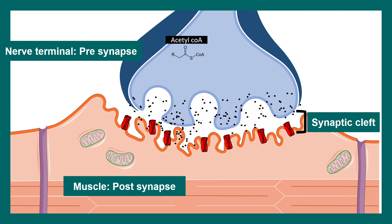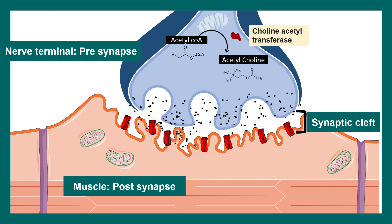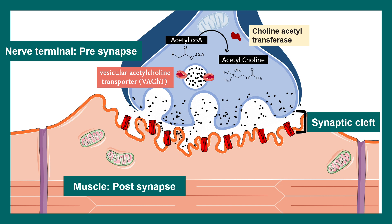Acetylcholine is generated from acetyl-CoA with the help of the enzyme choline acetyltransferase, and from there acetylcholine is loaded onto synaptic vesicles with the help of the vesicular acetylcholine transporter. Once loaded into these vesicles, they will eventually be fused at the nerve terminal when the action potential comes, and acetylcholine is released into the synaptic cleft.